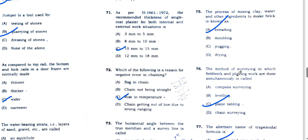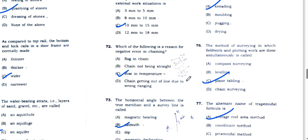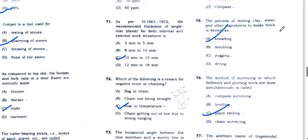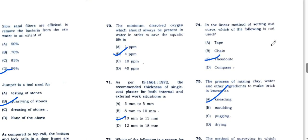Jumper is used for quarrying of stones. As compared to top rail, the bottom and lock rail in a door frame are normally made wider, option C. The water bearing strata, that is layers of sand, gravel, etc., are called aquifer, option C. Question 70, the minimum dissolved oxygen is 4 parts per million.